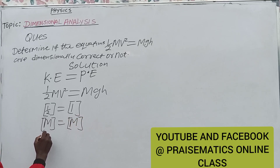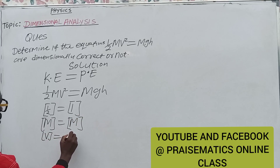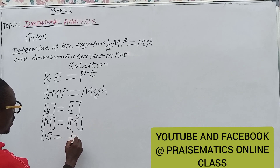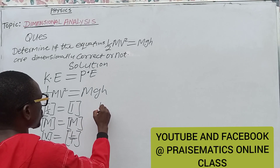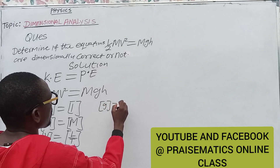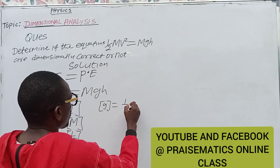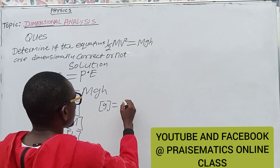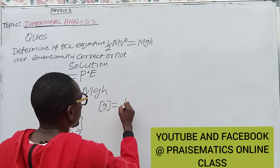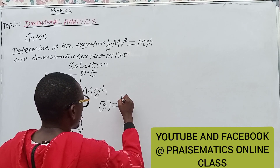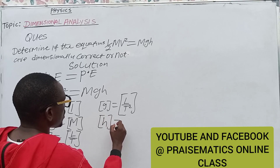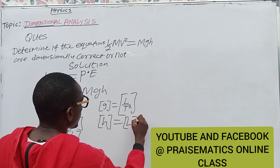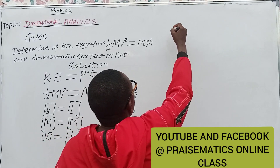The dimension of velocity is L over T — that is the dimension of velocity. The dimension of g is the same as the dimension of acceleration, which is L over T².